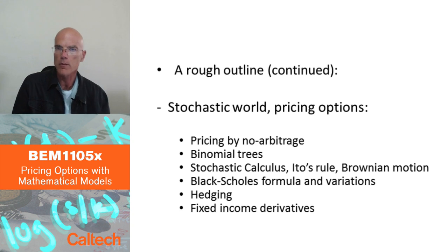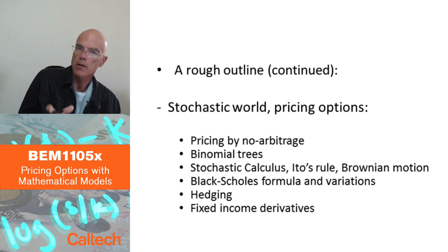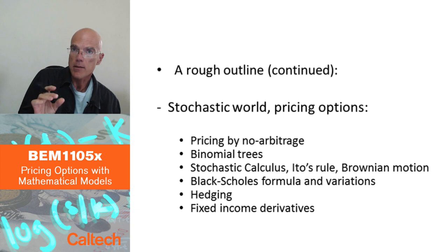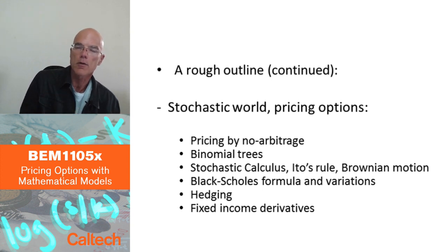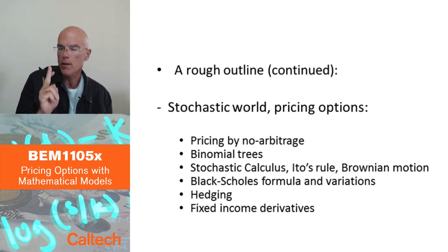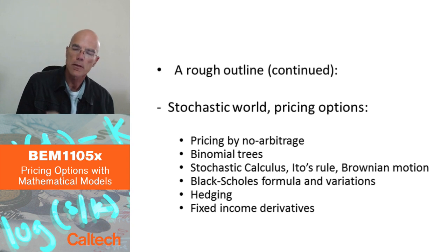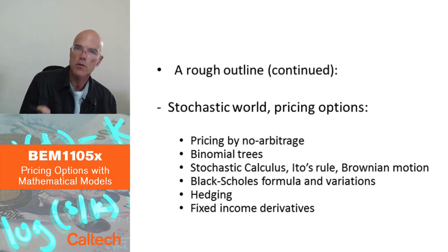Those models are called complete market models. Our main model, the Black-Scholes model, and its discrete version called the binomial trees model, are going to be complete market models. That means there is a unique price for each random or non-random payoff, consistent with no arbitrage. That's not necessarily realistic, but it's the benchmark and it keeps things simple. In reality you have a range of prices and a bid-ask spread, but for most of this course we concentrate on models where there is a unique price.